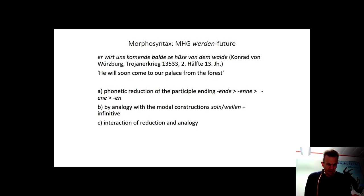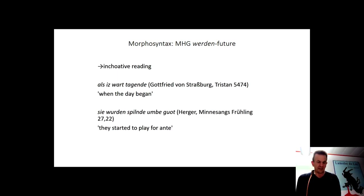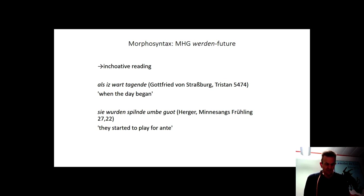Nevertheless, peripheries with an unambiguous future reading are still rare in Middle High German. The reason for this is that the periphery werden plus present participle originally had an incoherent meaning referring to the beginning of an action or a state, as in 'als is wart tagende' and 'Sie wurden spielende unbegurt' from Gottfried. As the evidence suggests, the incoherent reading of werden plus present participle is increasingly restricted to cases where werden occurs in the preterite.